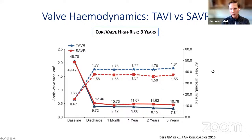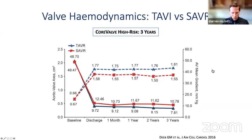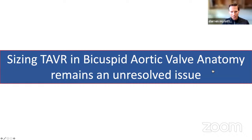TAVI has really prided itself on the hemodynamic performance achieved, certainly relative to surgical aortic valves and particularly with supraannular valves. But if we start taking smaller valves because of the need to supraannularly size, does that mean we potentially lose this hemodynamic advantage, and therefore potentially end up with shorter durability of the valve compared to valves implanted by our surgical colleagues? Ultimately, sizing for TAVI in bicuspid aortic valve anatomy is an unresolved issue, and that remains the case for both self-expanding and balloon expandable valves.